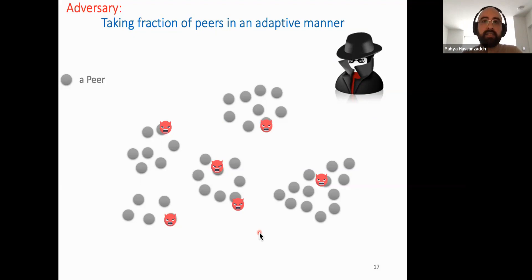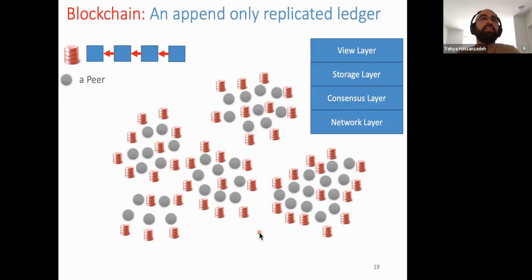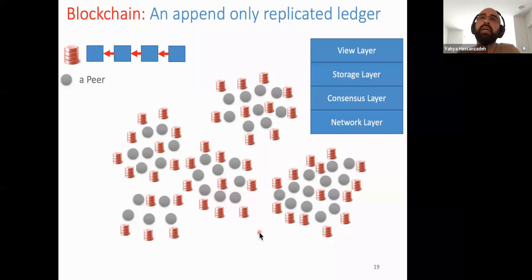Having reviewed hash functions, the ledger, and the adversary model, we can now look at the blockchain structure. In our Lightchain paper, we model the blockchain as a stack of four layers of protocols: network layer, consensus layer, storage layer, and view layer.